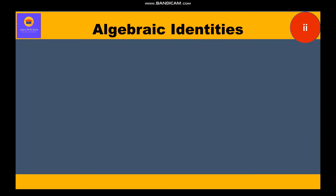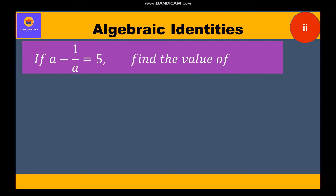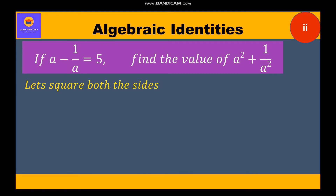Now let's move to question number 2. It is given: if a minus 1 by a is equal to 5, find the value of a square plus 1 by a square. Now let's start with the solution. It is given a minus 1 by a is equal to 5. Squaring both sides, we get a minus 1 by a whole square equal to 5 whole square.